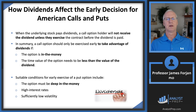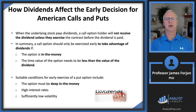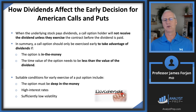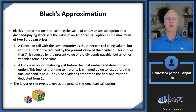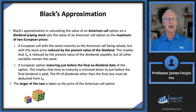For early exercise to make sense, the time value of the option must be less than the value of the dividend, and the option must be in the money. Suitable conditions for early exercise of put options are: deep in the money, high interest rates, and low volatility. Fisher Black's approximation calculates the value of an American call option on a dividend-paying stock as the maximum of two European prices: one where the stock price is reduced by the present value of dividends with the same maturity, and one where the option matures just before the ex-dividend date with a trimmed time to maturity.